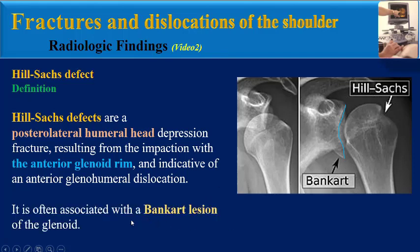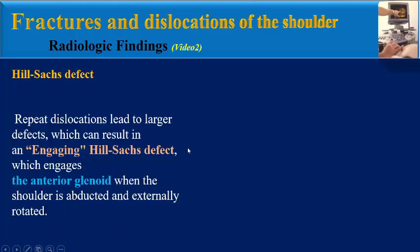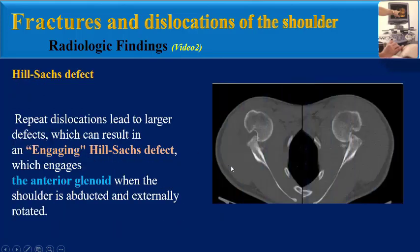It's often associated with a bank cord lesion of the galanoid. Repeat dislocations lead to larger defects which can result in an engaging Heel Socks Defect, which engages the anterior glanoid when the shoulder is abducted and externally rotated.